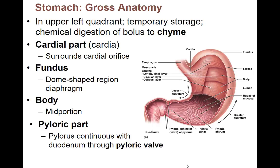At the very end, we've got the pyloric sphincter or pyloric valve that can open and close, allowing food to go into the small intestine. The purpose of the pyloric sphincter? It's a valve — it prevents backflow, even of food. Once food goes into the intestines, we don't want it going backward. Once food goes into the stomach, we don't want it going back up into the esophagus. These sphincter muscles are preventing backflow of food.